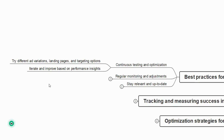Iterate and improve based on performance insights — if your ad has been running for more than a week, you will see insights on how it is performing. Based on those insights you can update the ad, change locations, change demographics, or change keywords. That is what is called improvement based on performance insights.